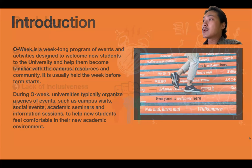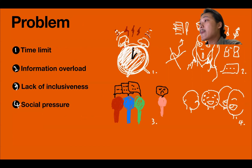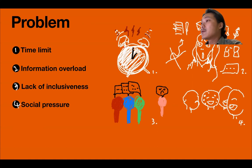Then I came to the problem step. I found out some problems still exist. First, time limit. OWIC usually lasts only one week or even less than a week, which may be a short time for freshmen to fully adapt to college life and become familiar with all available resources and services. Second, information overload. There may be a lot of information to be absorbed during a week, which may be overwhelming for some students where there are so many events and activities to choose from. It can be difficult for some students to decide which activity to attend, and with so much information presented during a week, it can be easy for students to forget information details about college policies, procedures, and resources.